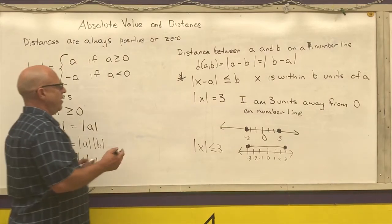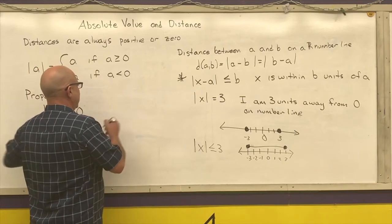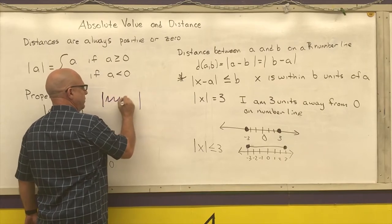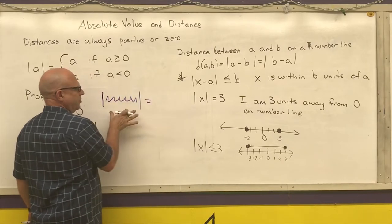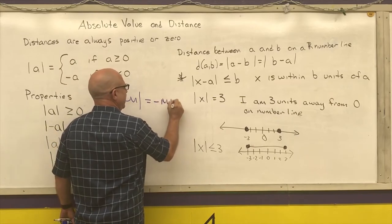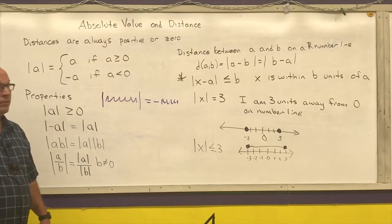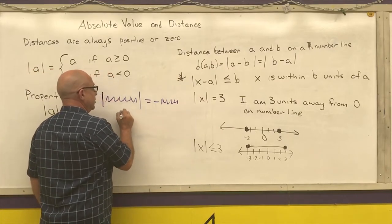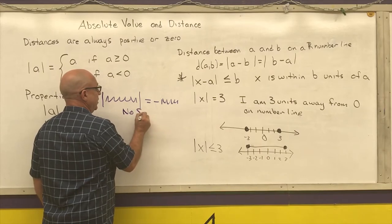If you ever end up with anything that looks like the absolute value of anything within absolute value bars is equal to some negative anything, it's impossible. It's impossible for an absolute value to equal a negative number, so you would write down no solution in this case.